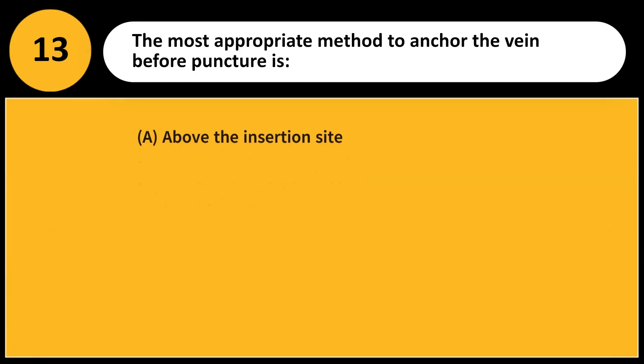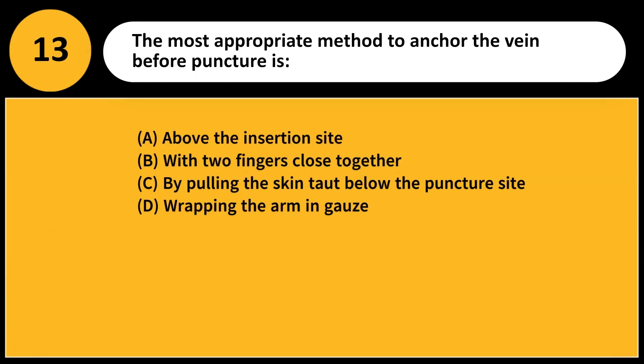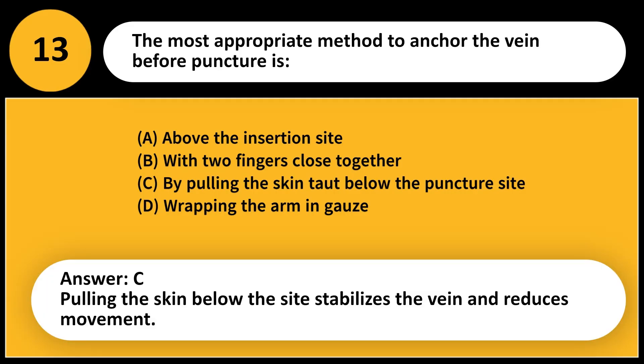The most appropriate method to anchor the vein before puncture is: A. Above the insertion site. B. With two fingers close together. C. By pulling the skin taut below the puncture site. D. Wrapping the arm in gauze. Answer: C. Pulling the skin below the site stabilizes the vein and reduces movement.